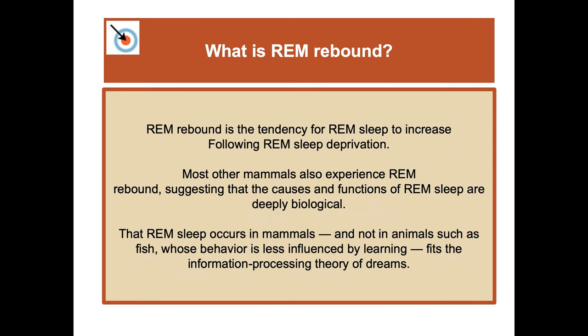There is also the concept of REM rebound — the tendency for REM sleep to increase following REM sleep deprivation. If you miss REM sleep for several nights in a row, when you finally get enough sleep your brain will go into REM rebound with an increased amount of REM sleep. Most other mammals also experience REM rebound, suggesting the causes and functions of REM sleep are deeply biological. The fact that REM sleep occurs in mammals but not in fish — whose behavior is less influenced by learning — fits the information processing theory of dreams.